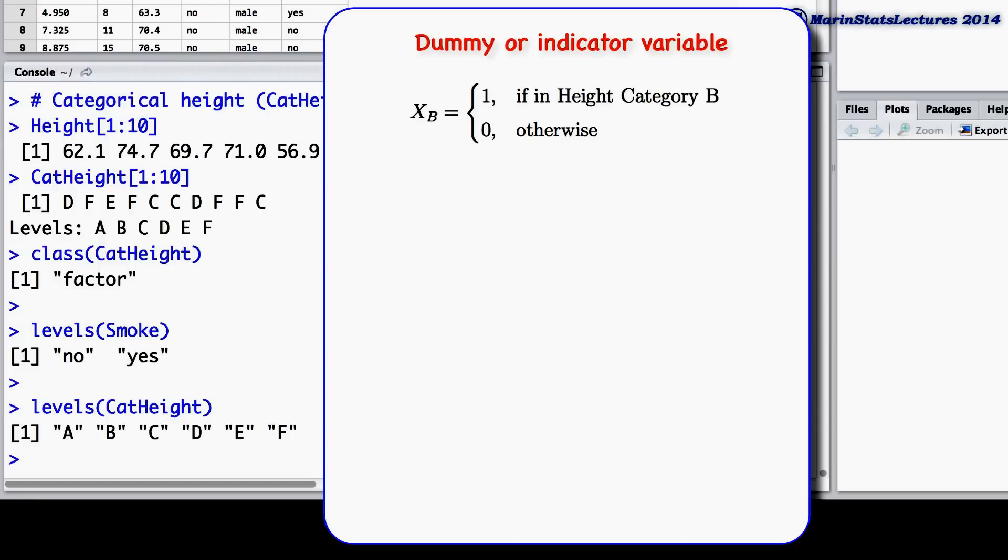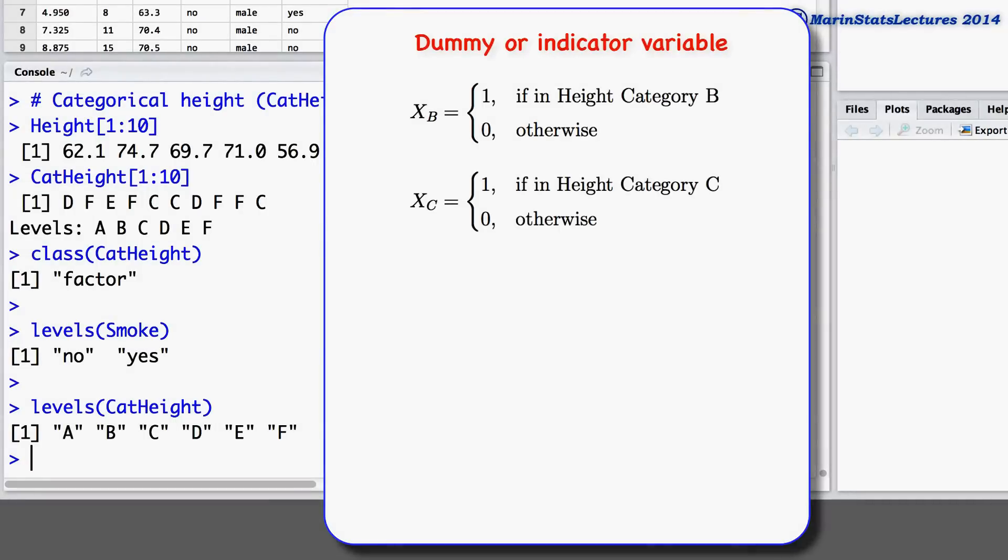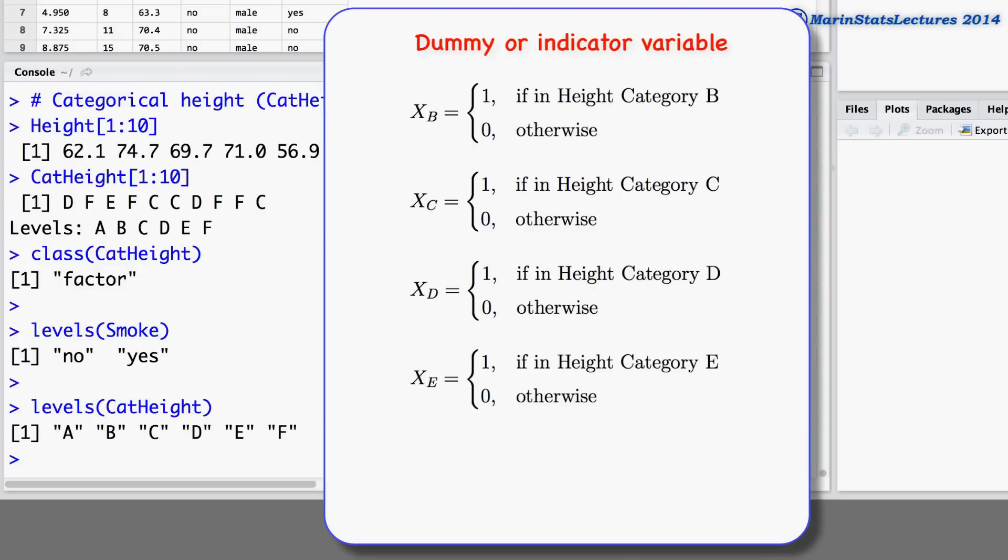We can create another dummy or indicator we'll call xC, and we'll set this equal to 1 if the individual is in height category C and 0 otherwise. We could also create indicators xD, xE, and xF indicating categories D, E, or F.